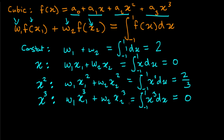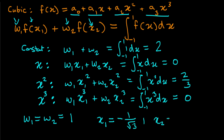With four equations and four unknowns, solving gives: w1 equals w2 equals one, so we have a weighting of one (compared to two for the linear model). The x values at which we evaluate the function are x1 equals minus one over root three and x2 equals one over root three. This is exact for all polynomials up to order three, and approximate for higher-order polynomials or complicated functions approximated by higher-order polynomials.